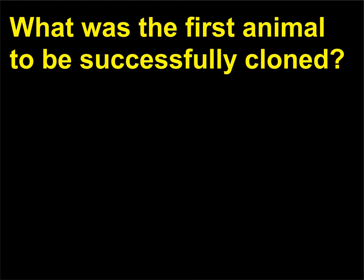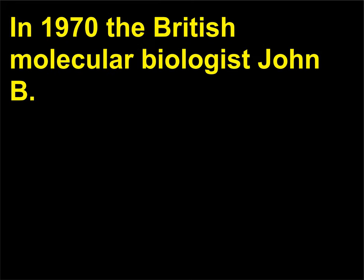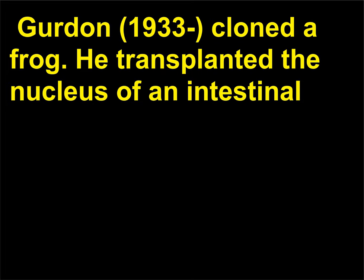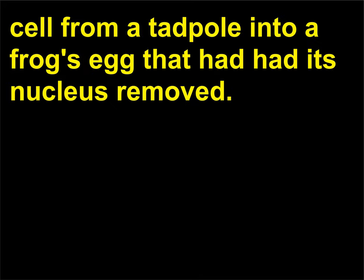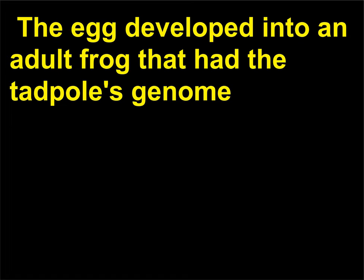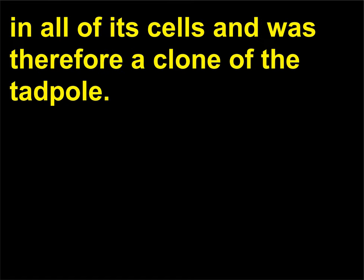What was the first animal to be successfully cloned? In 1970 the British molecular biologist John B. Gurdon (1933) cloned a frog. He transplanted the nucleus of an intestinal cell from a tadpole into a frog's egg that had had its nucleus removed. The egg developed into an adult frog that had the tadpole's genome in all of its cells and was therefore a clone of the tadpole.